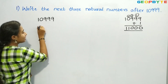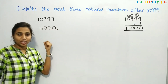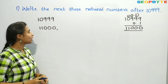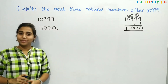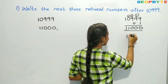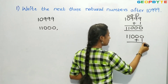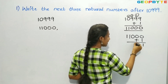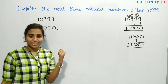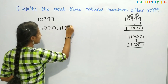Let us write 11,000. This is our first natural number after 10,999. Now, if we want to get the next natural number, we need to add 1 to 11,000. So, 11,000 plus 1: 0 plus 1 is 1, and we have the remaining 0s and two 1s. So after 11,000 we get 11,001.